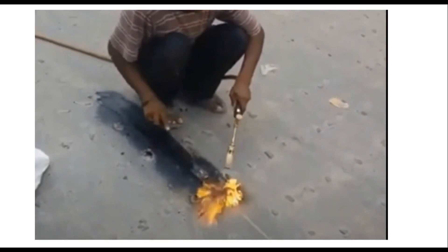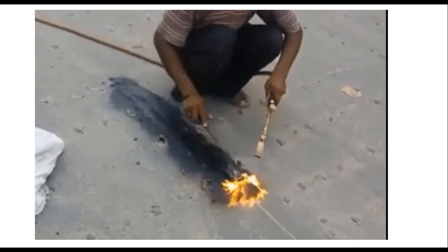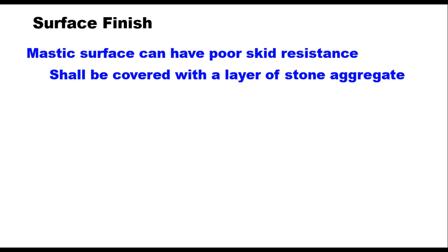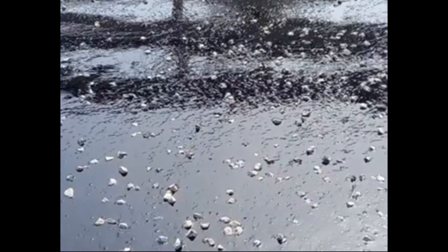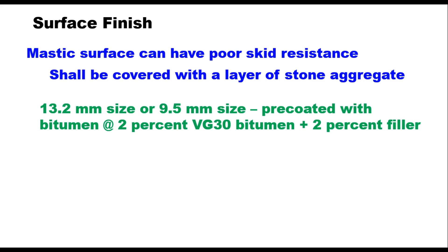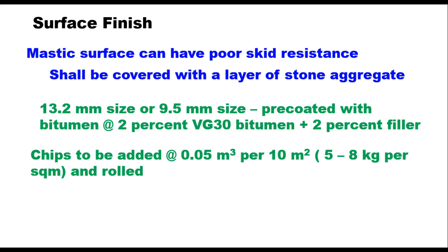Care should be taken to make joints in the green stage itself, otherwise the laid mastic surface shall start aging due to another round of heating. When laid manually, the mastic surface has a very fine texture with very little heat resistance. Therefore, bitumen mastic while still hot and in plastic condition shall be covered with a layer of stone aggregate of size 13.2 mm or 9.5 mm, pre-coated with bitumen at 2% VG 30 plus 2% filler, applied at around 5 to 8 kg per square meter and rolled.